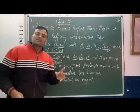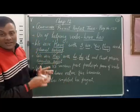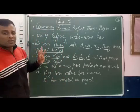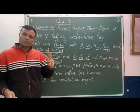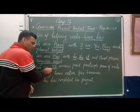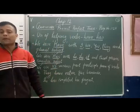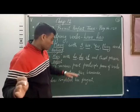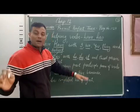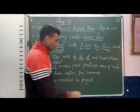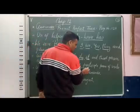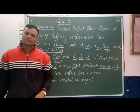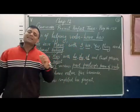In perfect tense — whether it is present perfect tense, past perfect tense, or future perfect tense — we use V3. So in present perfect tense we use V3. V3 means the past participle form of the verb. Now see the example.